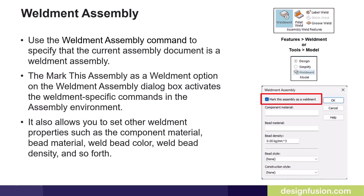You use the weldment assembly command to specify that the current assembly document is a weldment assembly. The 'mark this assembly as a weldment' option on the weldment assembly dialog box activates the weldment-specific commands in the assembly environment. It also allows you to set other weldment properties such as the component material, bead material, weld bead color, weld bead density, and so forth.